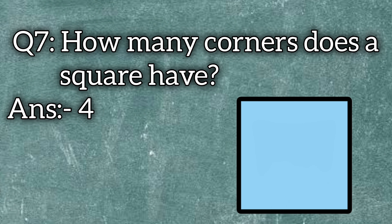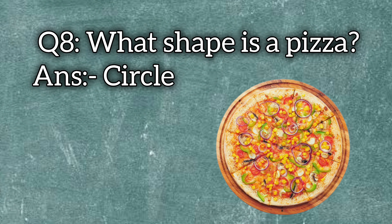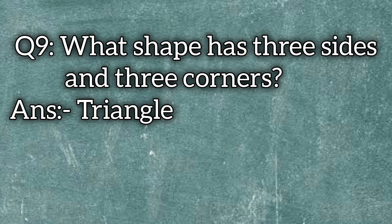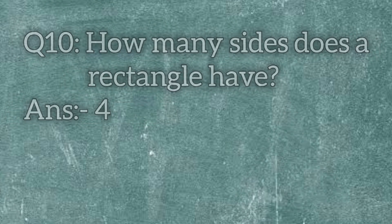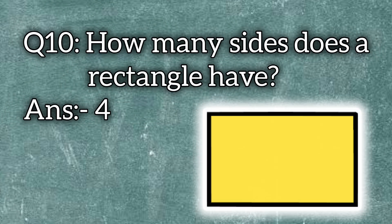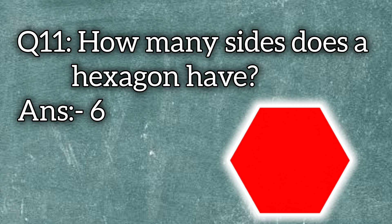What shape is a pizza? The answer is circle. What shape has three sides and three corners? The answer is triangle. How many sides does a rectangle have? Four. How many sides does a hexagon have? Six sides.